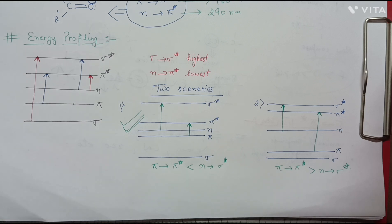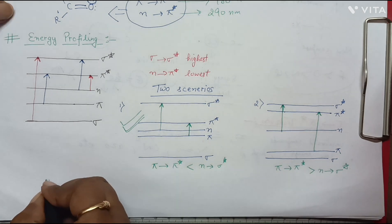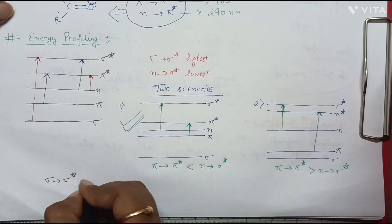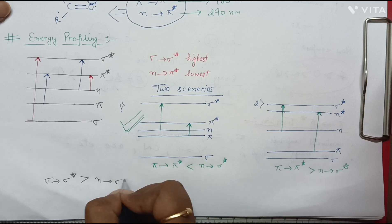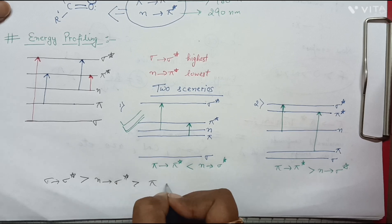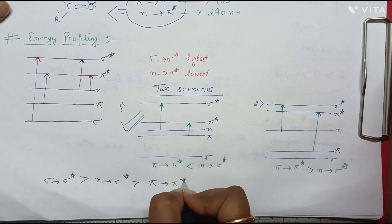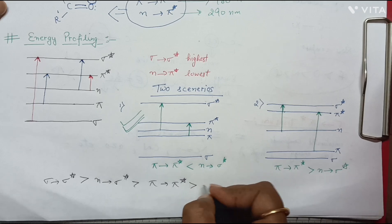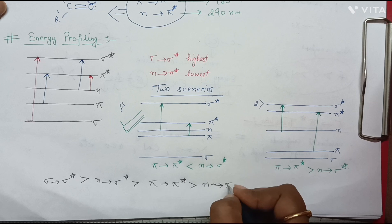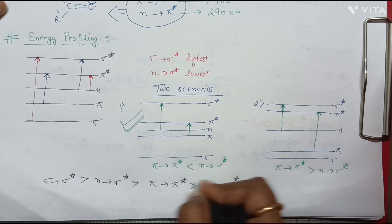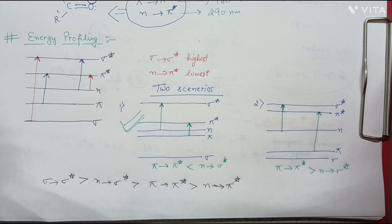Looking at the overall picture, the energy profiling order is: sigma to sigma star gap is highest, followed by n to sigma star, followed by pi to pi star, and then the least energy gap is between n and pi star. I hope energy profiling is clear.